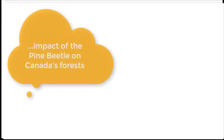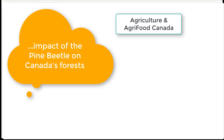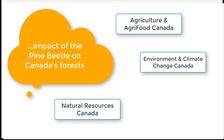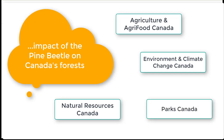For example, perhaps you'd like to know more about the impact of the pine beetle on Canada's forests. The challenge, though, is knowing which government site will have the information you're looking for. Unlike statistics, which we know are mostly going to be found on StatsCan's site, there are going to be multiple departments and agencies publishing information on the pine beetle. So you could try guessing which government departments to try and scour their sites one by one, but you might not have time to do that. And what if you miss a department that you just didn't think of searching?